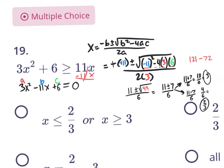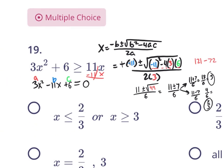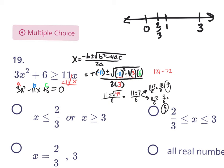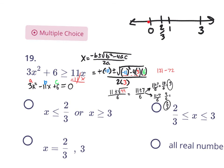That would be the answer if it were an equation, but we know it's an inequality — so that's barely step one. Step two is to go to a number line and plot your values: 2 thirds over here and 3 over here, which means 1 is between them and 0 is further left. We need to test some values to see where our answers are. We could test 0, which is on the outside, or we could test 1, which is on the inside. It's up to you what values you want to test.